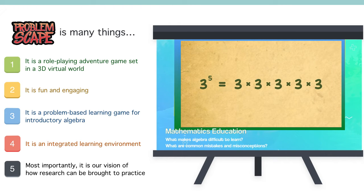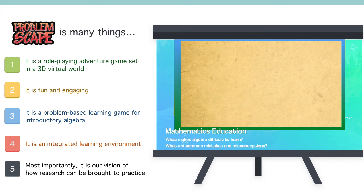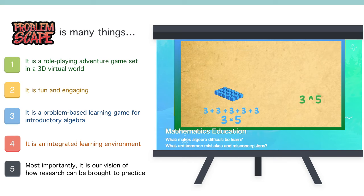To make videos for a math concept, we start with questions like what makes a subject difficult to learn, and what are common misconceptions and mistakes, and then we look for answers in mathematics education research. Sometimes my students get confused between 3 times 5 and 3 to the power of 5. Let's start with 3 blocks. When we multiply it by 5, we get 5 sets of 3 blocks. Let us now raise 3 to the power of 5, which means that 3 is multiplied by itself 5 times.